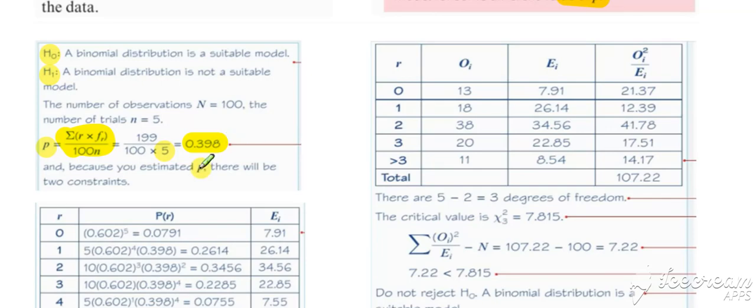Because you estimated p, there will now be two constraints to the problem, which will affect our degrees of freedom.